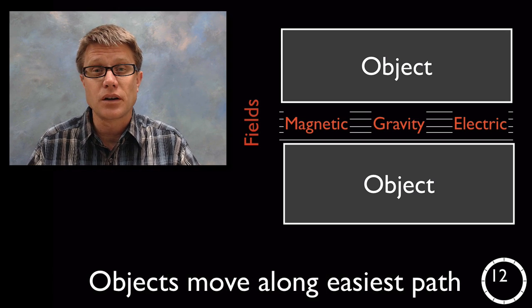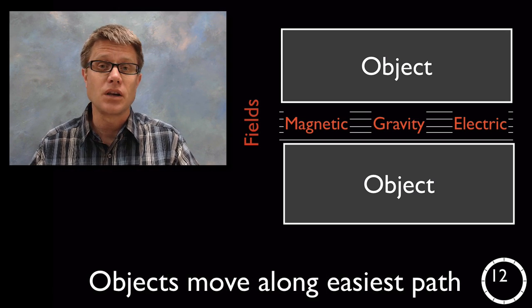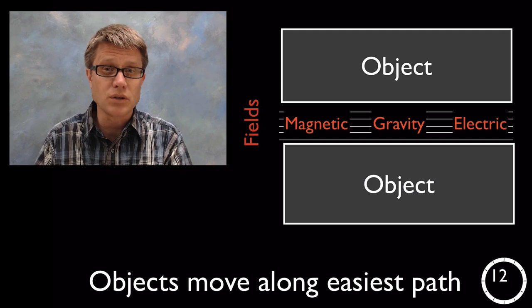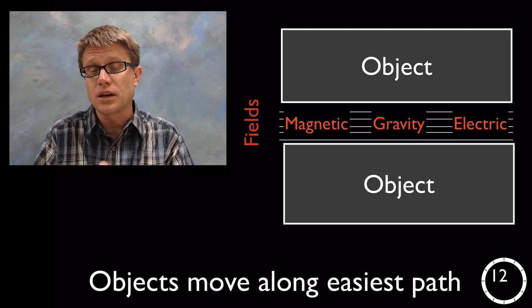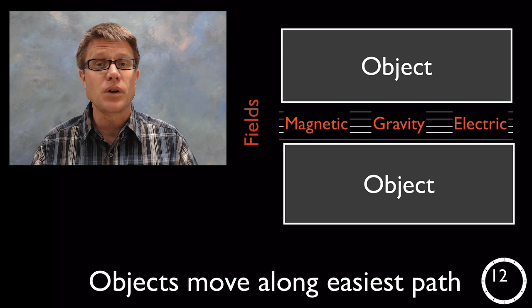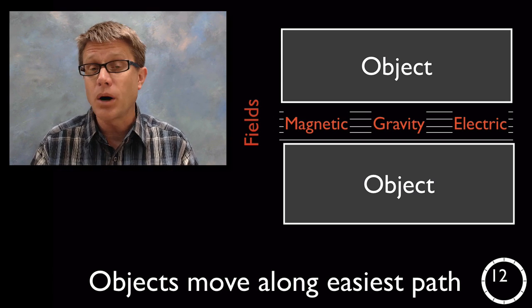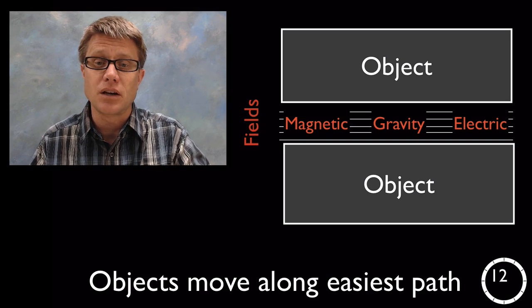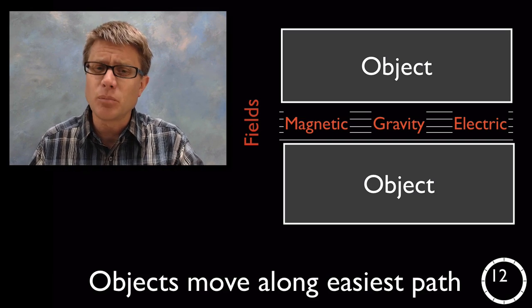And objects are going to tend to move along their easiest path. In other words if we have two objects that are attracted to one another they're going to move towards each other. They're going to move in a way that can reduce the amount of field energy. Likewise if we have two magnetic poles that are going to oppose each other they're going to move away from each other. And that's going to lessen that field energy as well. Now it's not as simple as that.